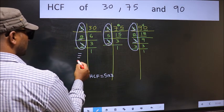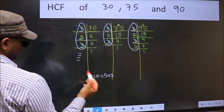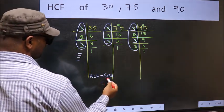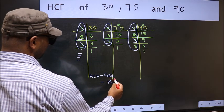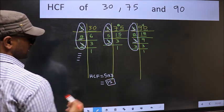No more numbers have been left out. So HCF is 5 into 3. 15 is our HCF.